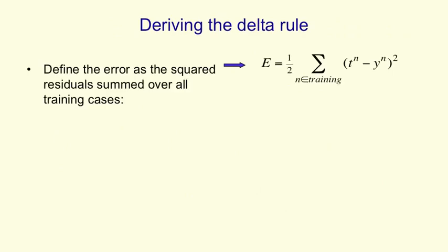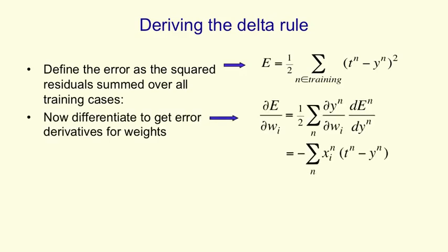So now we're going to derive the delta rule. We start by defining the error measure, which is simply the squared residual summed over all training cases — the squared difference between the target and what the linear neuron predicts, summed over all training cases, with a half in front which will cancel the two when we differentiate. We then differentiate that error measure with respect to one of the weights, w_i. To do that differentiation, we need to use the chain rule. The chain rule says that how the error changes as we change a weight equals how the output changes as we change the weight, times how the error changes as we change the output.